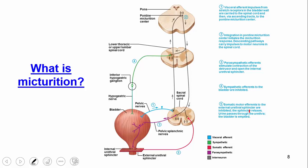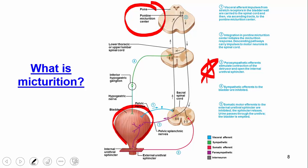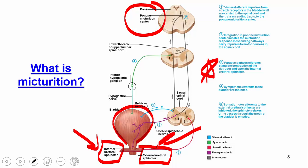Micturition is just a fancy way to say urination. The brain center controlling this is the pons. There are three main muscles involved — some under voluntary control, some involuntary. Once the parasympathetic nervous system is activated, the detrusor muscle contracts. Then, involuntarily, the internal urethral sphincter relaxes, allowing urine to start emptying. Finally, you need voluntary release of the external urethral sphincter — that's the conscious decision to urinate — all under the control of the pons.